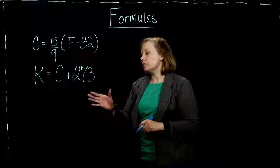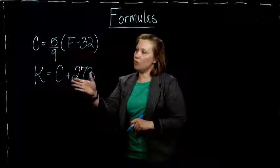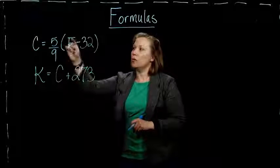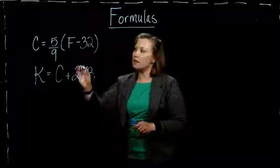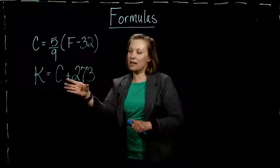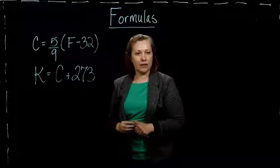So these two formulas work together. We could put in a number for Fahrenheit, get the Celsius temperature, and then take the Celsius temperature and plug it into this formula, and that would give us the Kelvin.